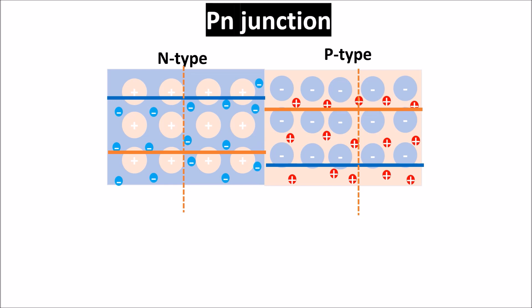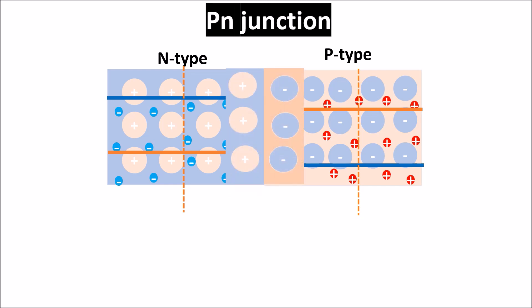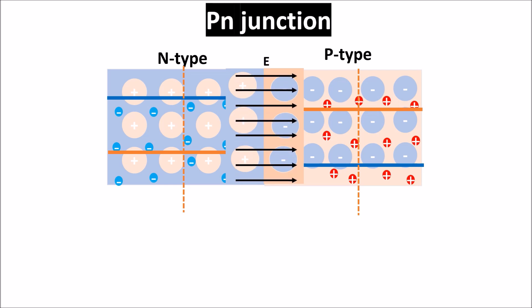Some electrons at the junction go into the P-type material, attracted to holes in the covalent silicon-boron bond, and some holes go into the N-type. The region close to the junction turns into a region where there are no free carriers anymore, because all free carriers are bound to atoms — this is called the depletion region. This region is electrically charged, because the phosphorus atom without an electron is electrically positive, and the boron atom is electrically negative, having one more electron in the covalent bond.